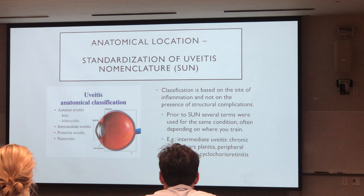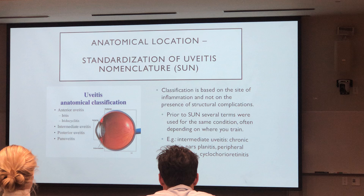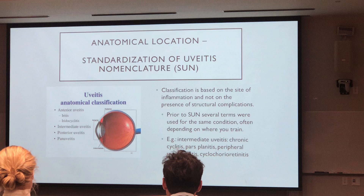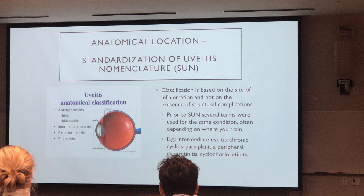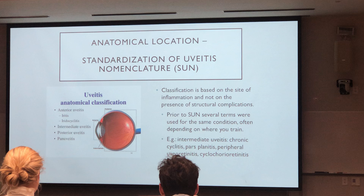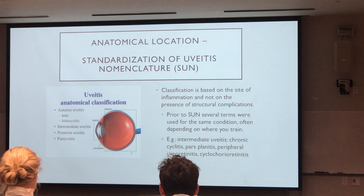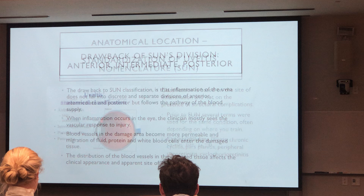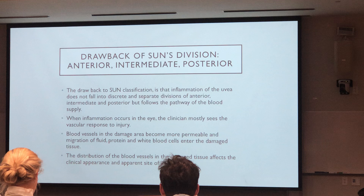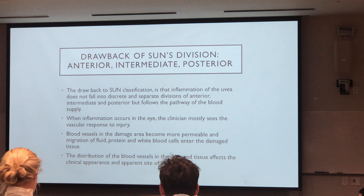Anatomical location — the standardized uveitis nomenclature system was a great help. Before it was developed, we had different names for the same type of uveitis, and a lot of that depended on where you trained. If you trained on the east coast, you might have called it peripheral uveal retinitis; in the Midwest, parscplanitis; on the west coast, chronic cyclitis. The drawback to the division of anterior, posterior, and intermediate is that the inflammation of the uvea does not really fall into discrete separate divisions.